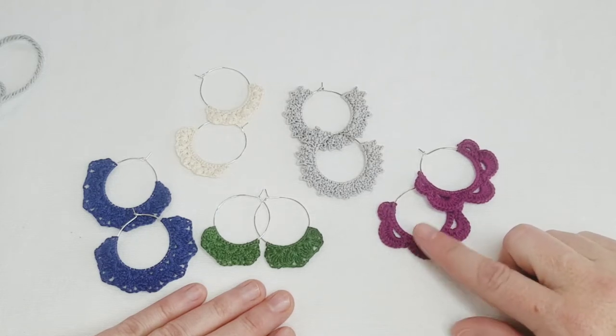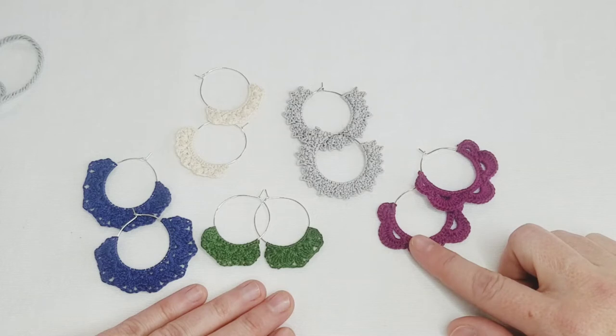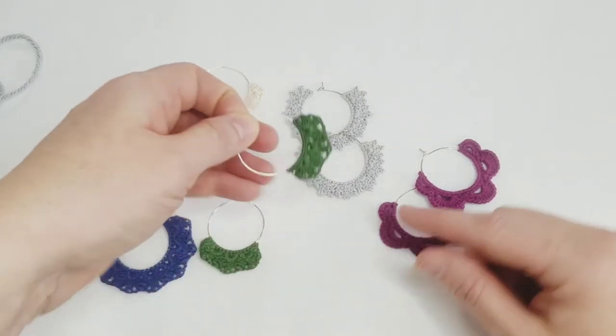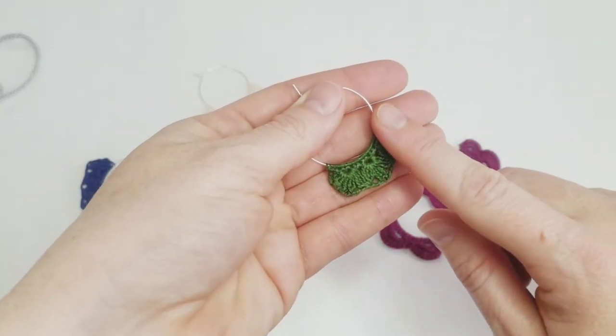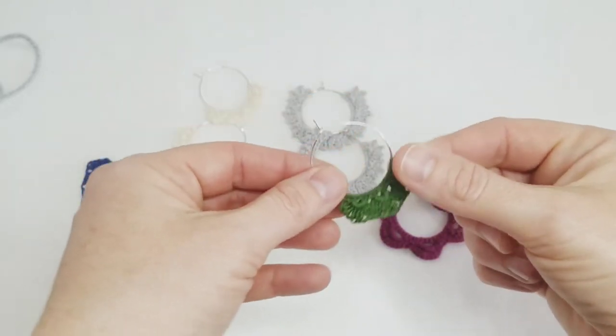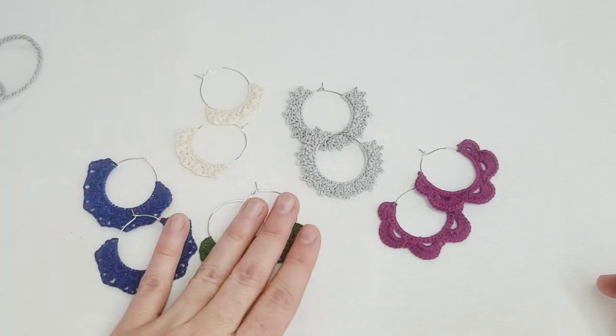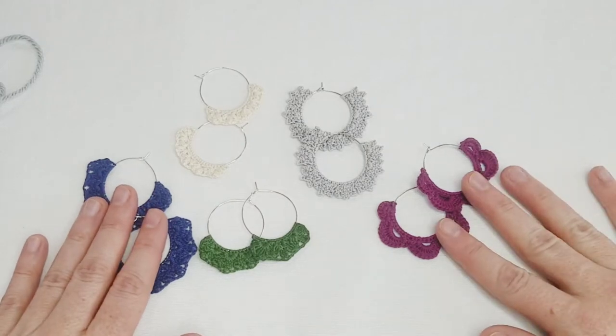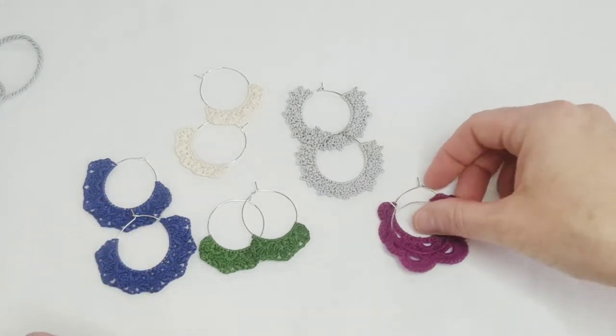I love making crocheted earrings, and since it's springtime I always start thinking about them this time of year. I start all of my crocheted earring patterns by crocheting around the hoop. While crocheting with thread and crocheting around a hoop can be a bit finicky at first, it's a fun skill to have, and I'm going to give you all the tips and tricks today to help make it as easy as possible.